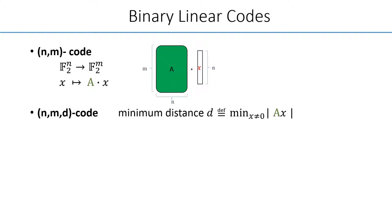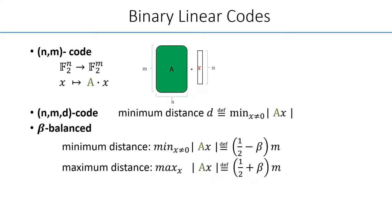In general, a good code has some non-trivial amount of minimum distance, which is defined as the smallest Hamming distance between all possible pairs of codewords. Some previous work considered a strong version of Hamming distance requirement, called balanced code, where this Hamming distance has both upper bound and lower bound.